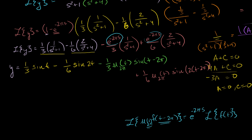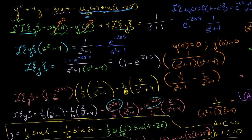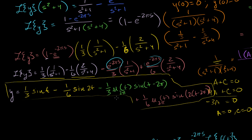And there we have it — we've finally solved our very hairy problem. The full solution is y = (1/3)sin(t) − (1/6)sin(2t) − (1/3)u_{2π}(t)·sin(t − 2π) + (1/6)u_{2π}(t)·sin(2(t − 2π)). This looked like a fairly straightforward differential equation, but the actual solution satisfying those zero initial conditions is quite involved.